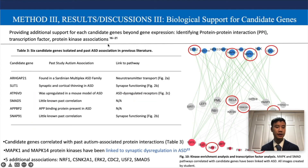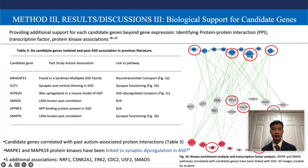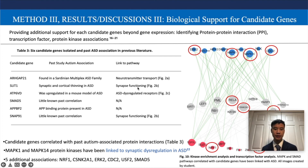My third method was to provide additional support for each candidate gene beyond gene expression, through identifying protein-protein interactions, transcription factors, and protein kinase associations in past literature. The candidate genes were correlated with past autism-associated protein interactions, especially the MAPK1 and MAPK14 protein kinases, which have been linked to synaptic dysregulation and autism. There were five additional autism associations circled in red. Table 3 also shows how the six genes were mapped back to the three major biological processes implicated in autism: neurotransmitter transport, synapse functioning, and autism dysregulated receptors, as seen in Figure 2.